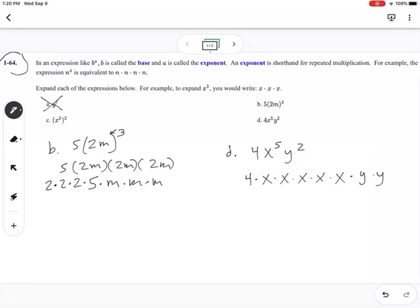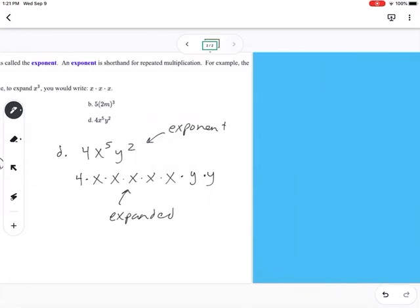So we have two of those. So this would be what we call expanded form. So this is exponent form, and this is expanded form. Okay, so that's kind of the basics of how you expand things that are in exponential form.